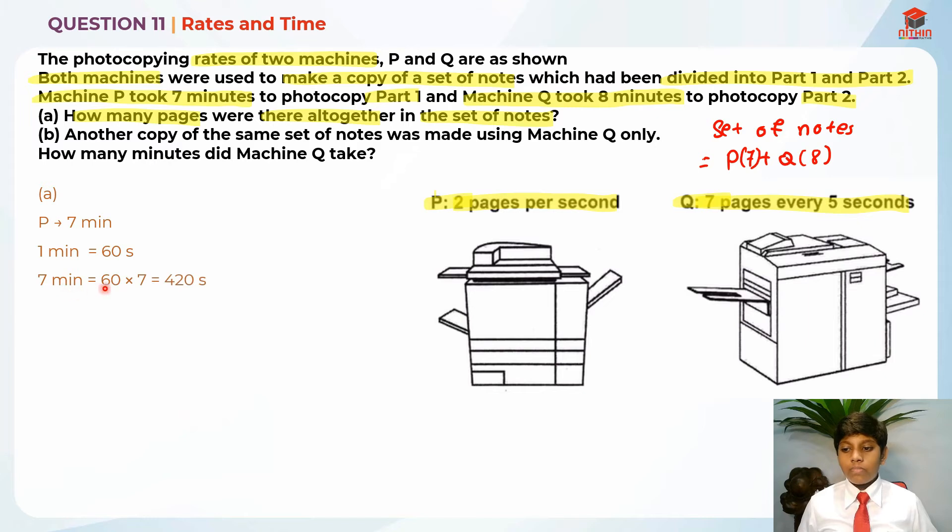So in order to find 7 minutes, it basically took 420 seconds because it's 60 seconds times 7 which will give us 420 seconds. So we know per second is 2 pages printed, so 420 seconds times 2 which will give us 840 pages for part P.